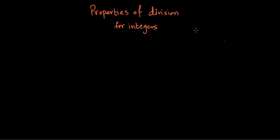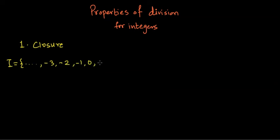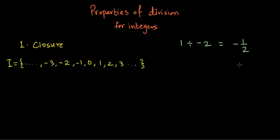The very first property is the closure property. Closure is when you choose any two numbers from the given set and divide them — do you get a number in the same set? The set of integers includes negative numbers, zero, positive numbers, and so on. Let me choose 1 and minus 2: 1 divided by minus 2 gives minus 1 over 2. Is this an integer? Not an integer. So the integer set does not follow closure under division.